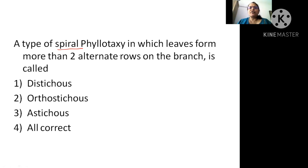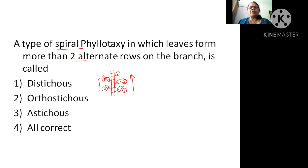In spiral phyllotaxy, more than two alternate rows are present on the branch. To understand spiral phyllotaxy, suppose this is a stem and these are the node areas. From one node, only one leaf will come. If you see from the diagram, the first leaf, second leaf, and third leaf show that the third leaf is on top of the first leaf. So you find only two vertical rows — this is one vertical row and this is another vertical row.